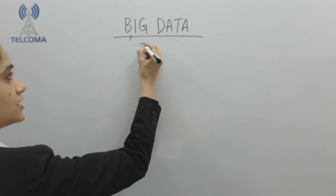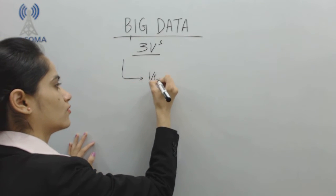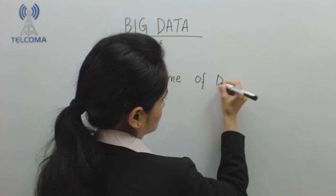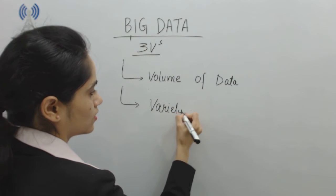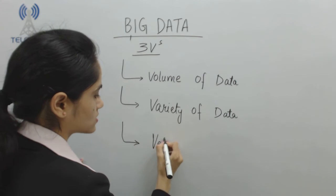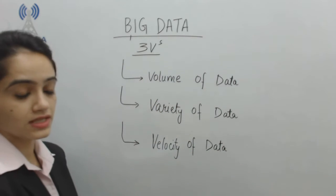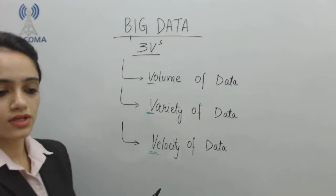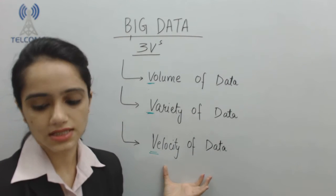In big data, we mostly have the three V's concept. The first V is Volume of data, the second is Variety of data, and the third is Velocity of data. Volume is basically the storage capacity; variety is the type of data we are recording; and velocity is the processing speed or processing time.